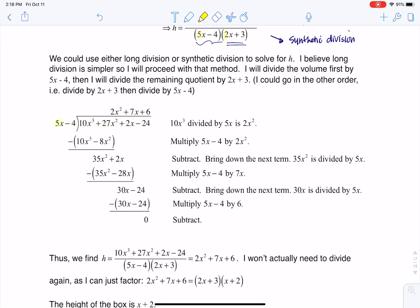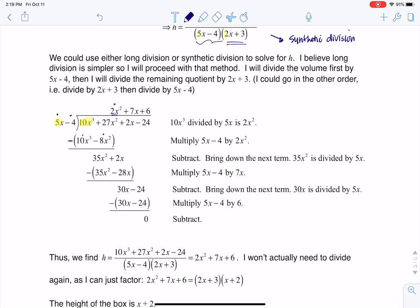It's always lead term to lead term. So what do I need to multiply 5x by to get to 10x cubed? Well, let's see, that would be 2x squared. So I'm going to take 2x squared, multiply it to my binomial. That'll give me 10x cubed minus 8x squared. But I do need to remember to subtract it, and I'll just distribute that subtraction. So this will become plus. These cancel by design, 27 and 8 gets me to 35.